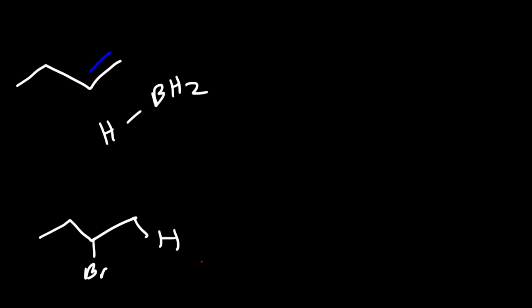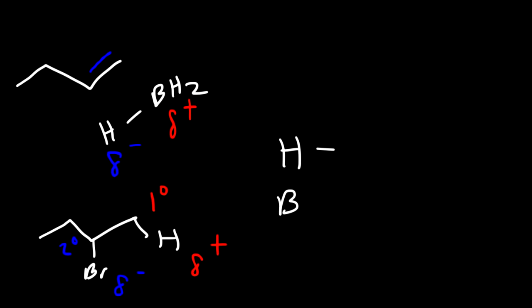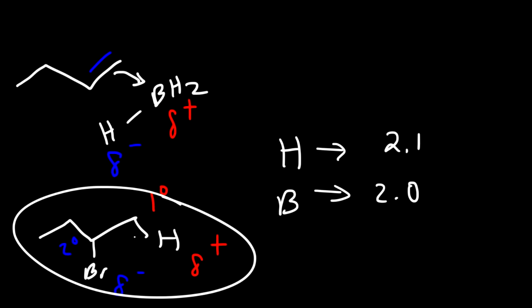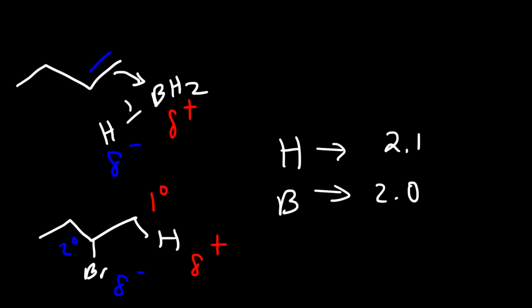Notice that the partially positive hydrogen atom goes on a primary carbon, and the partially negative bromine atom goes on a secondary carbon. Something similar happens in the first step of hydroboration. Hydrogen has a partial negative charge and boron has a partial positive charge. The EN value for hydrogen is 2.1 and for boron it's 2.0, so boron is slightly less electronegative. The double bond attacks the partially positive boron atom, and then the hydride ion attacks the carbon. This happens all in one step — it's a concerted reaction mechanism.